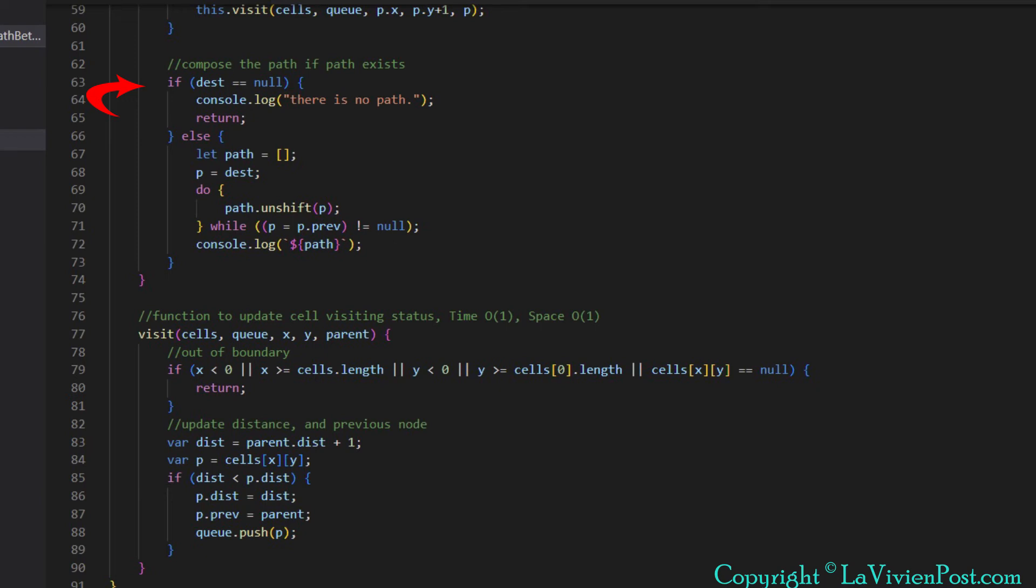If the dest is null, it means destination is not reached. We simply return. If the dest cell is not null, we retrieve all previous cells starting from destination cell and save them in a list. Finally, we print all cells in this list as a result of shortest path.